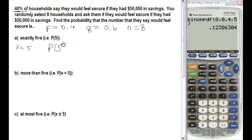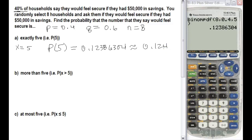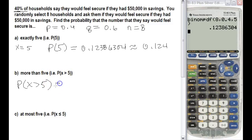That result of approximately 0.124 means there is about a 12.4% chance that exactly five households said they would feel secure with $50,000 in savings. For Part B — more than five — since this is a discrete binomial distribution, we could compute P(6) plus P(7) plus P(8), but an easier approach is to use the complement from Part C.